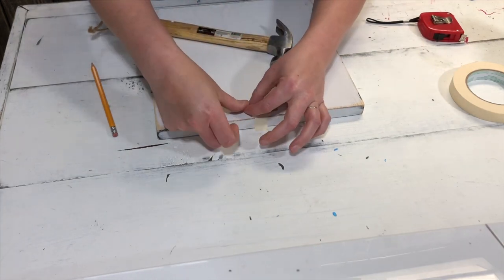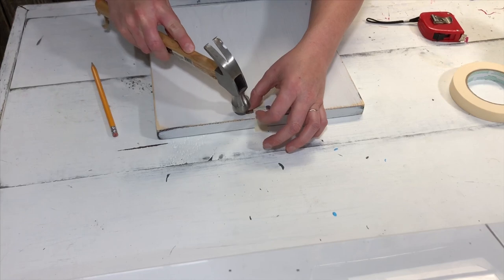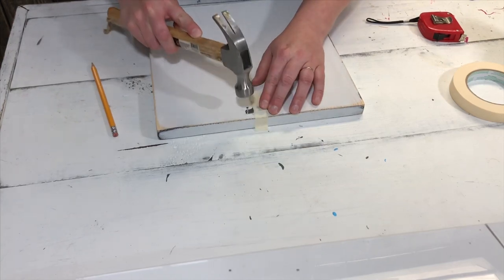So just lightly tap them into place and then once you have them in place, you're ready to take off the masking tape. Then you can hang it on your wall and display it in your home.